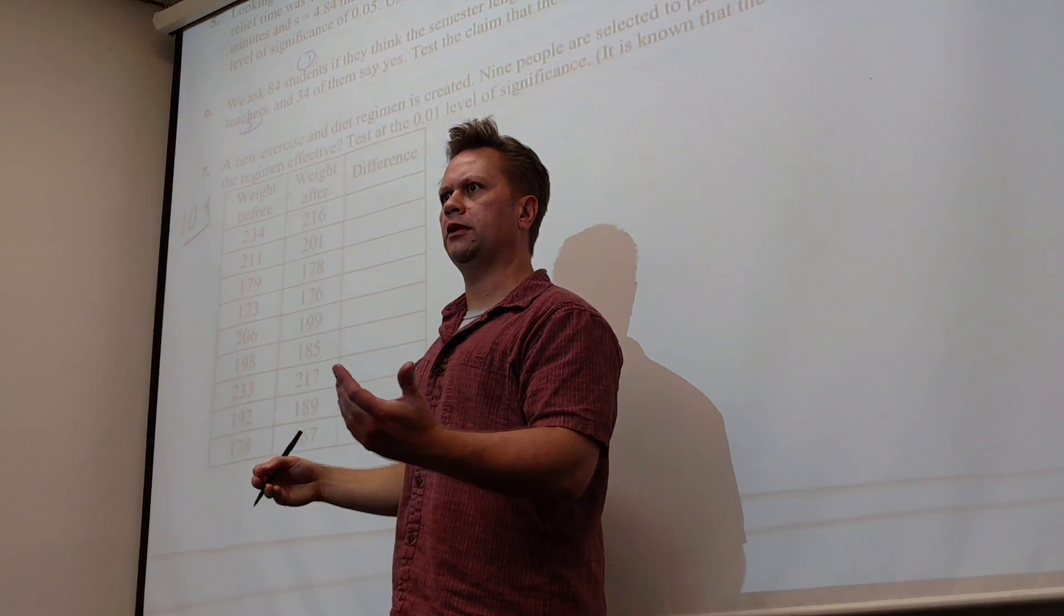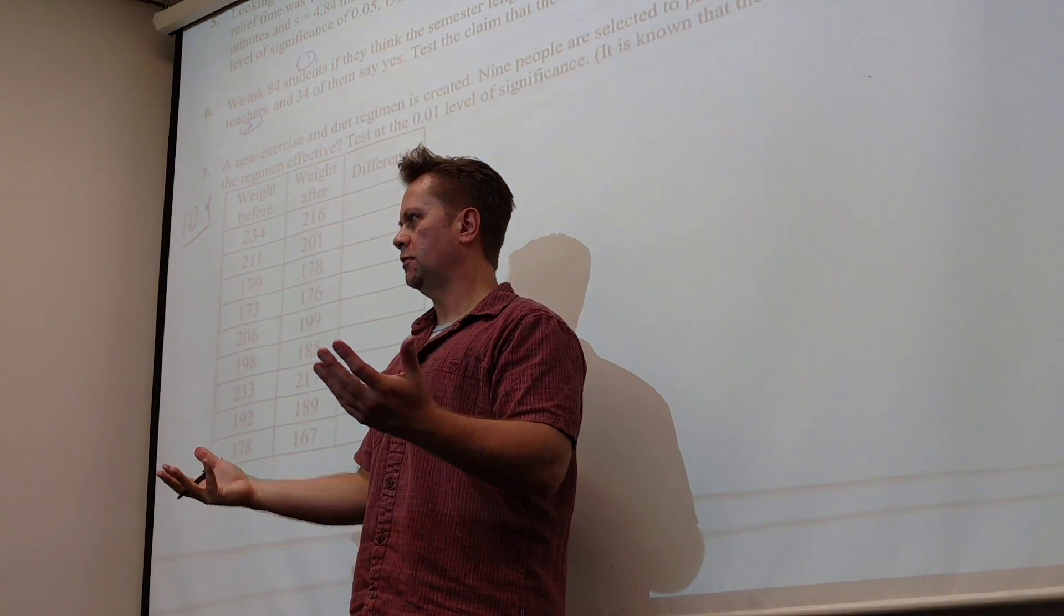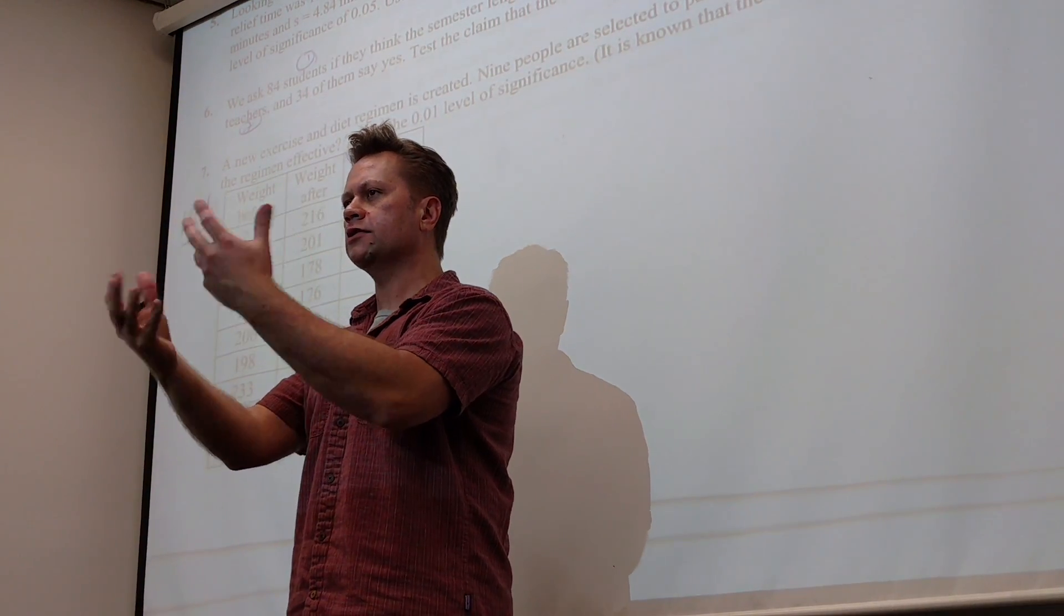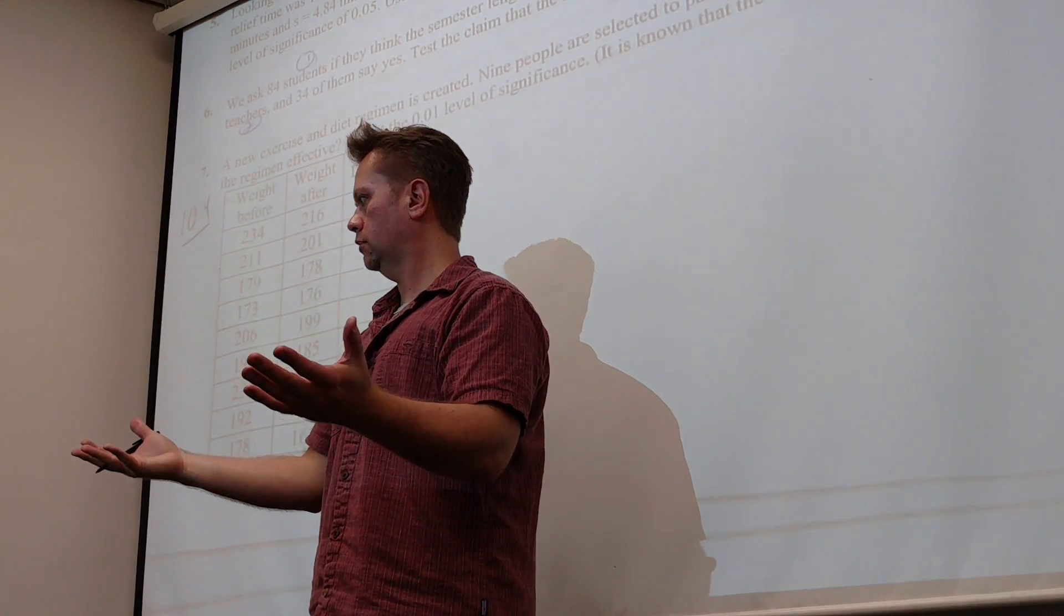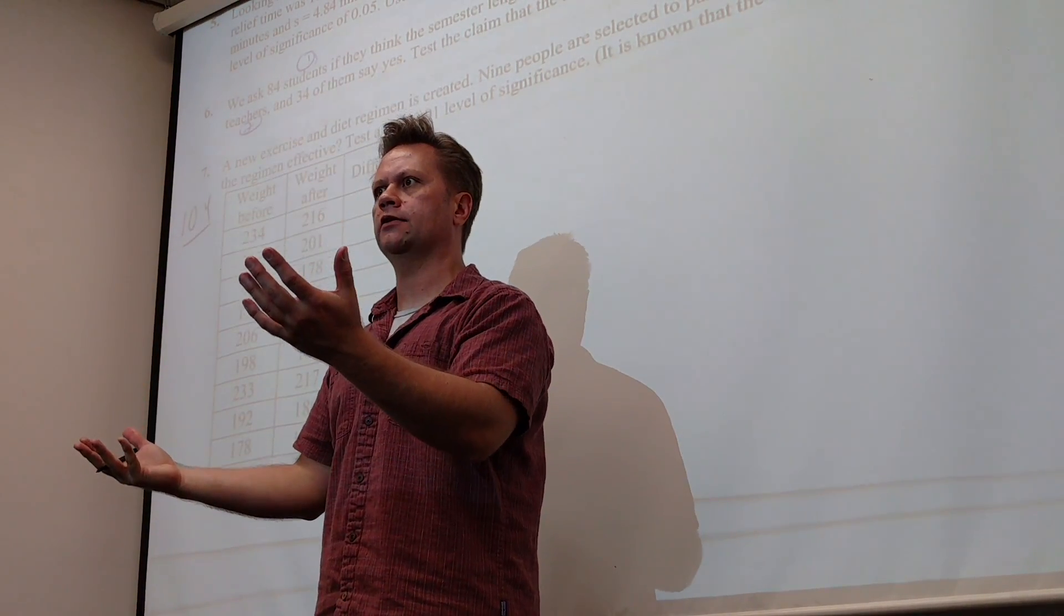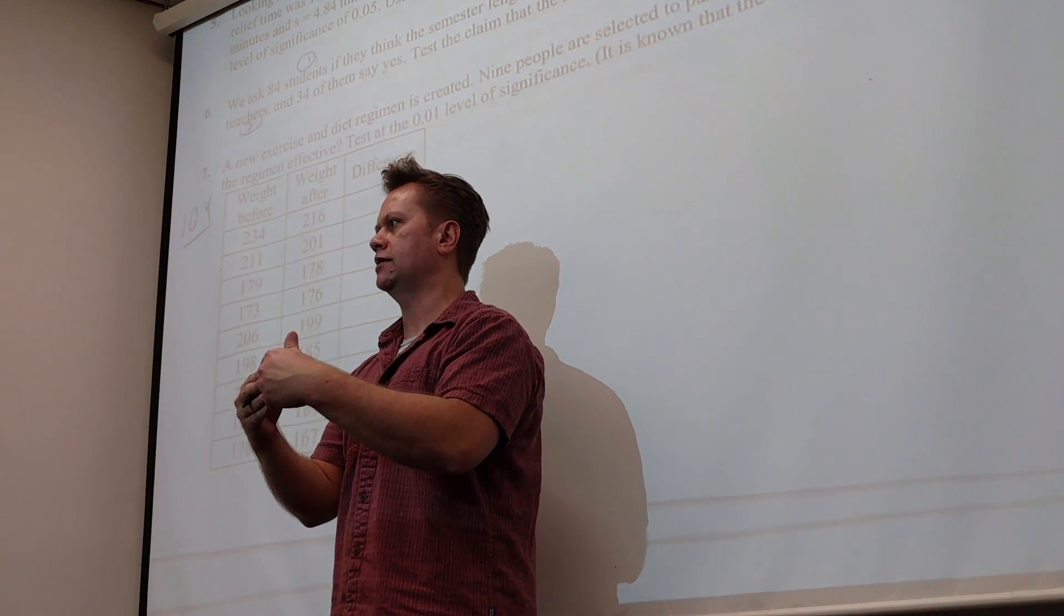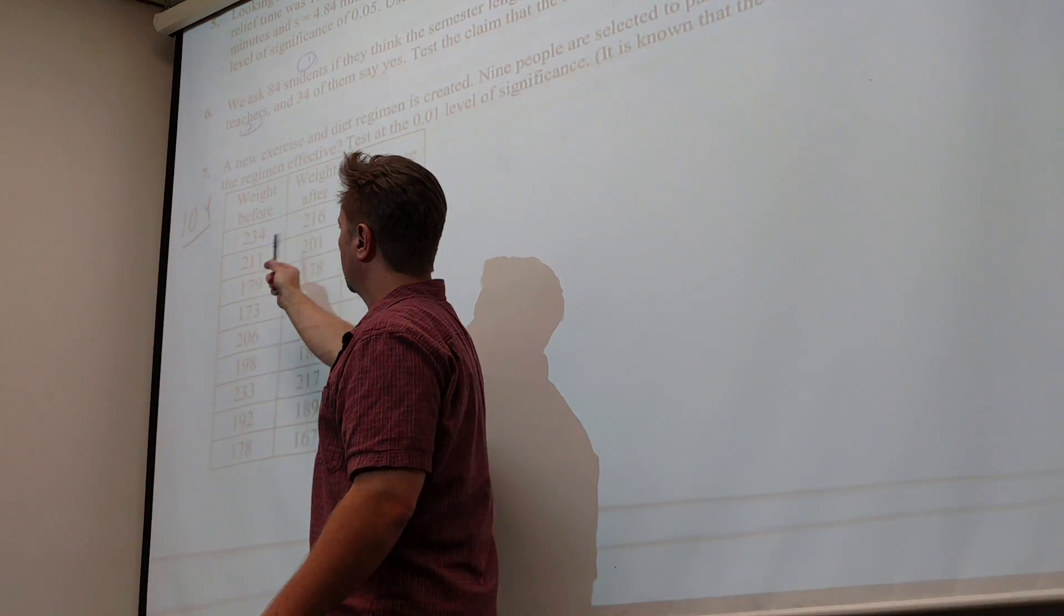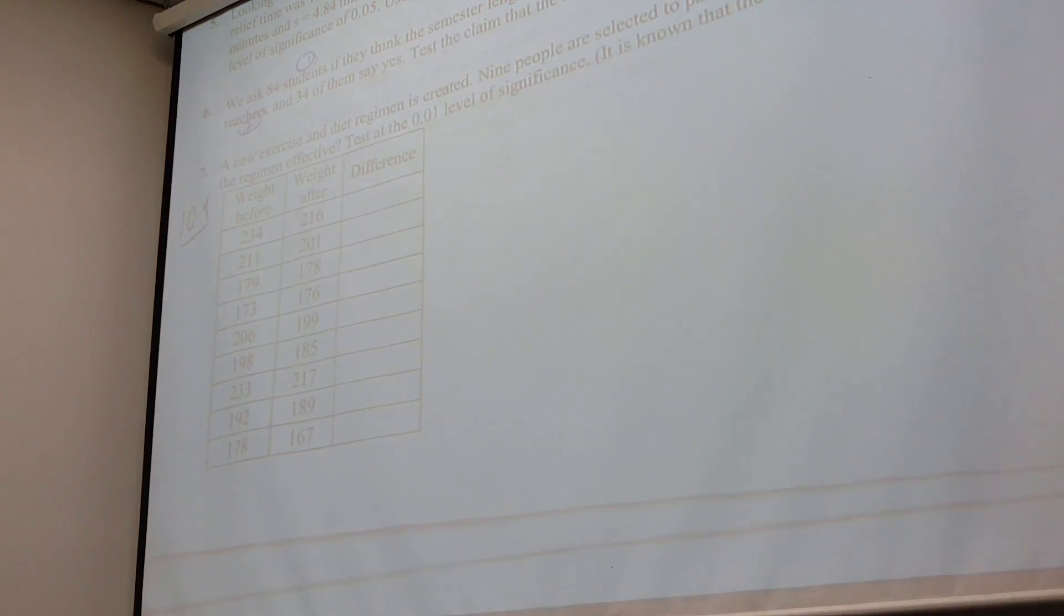So the funny thing with this kind of problem is this is not your data. You create your data by just taking the differences. Your list of data will be the differences. And then your null will be that the differences equal zero. The mean of the difference. Because if there was no effect, then the average difference should be zero. It really has no effect.